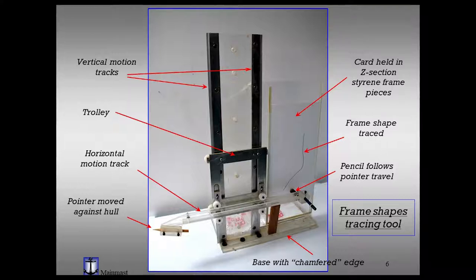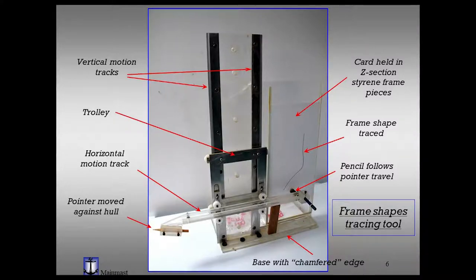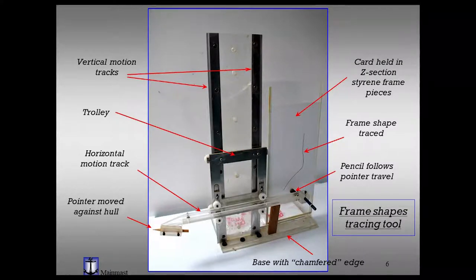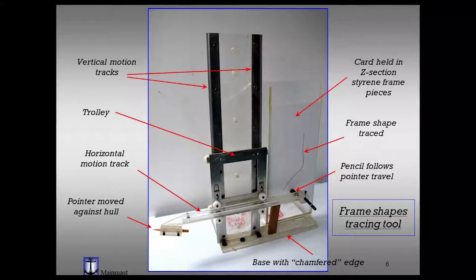The half model is mounted vertically and a four-sided trolley moves up vertical tracks on nylon wheels. The card for each frame is slid into a Z-section styrene frame; moving the pointer against the hull in a vertical direction causes the pencil on the other end to follow and draw an actual frame shape on the card. You then take the card out, put a fresh one in, move the base along to the designed room and space, and continue the same process.